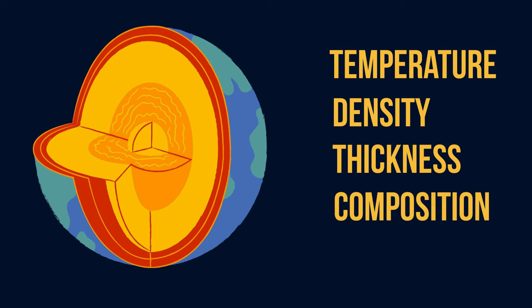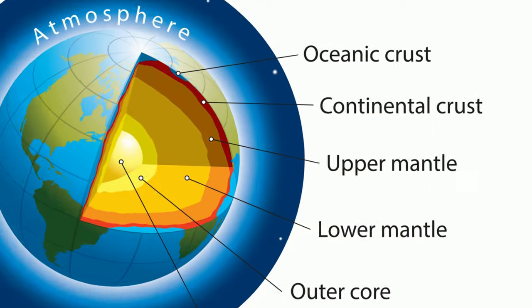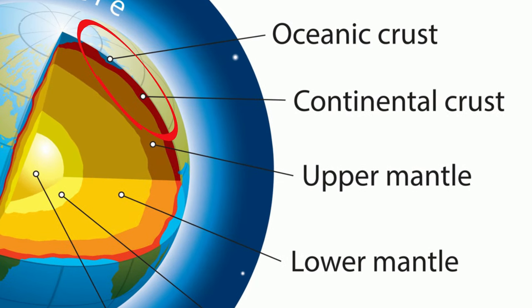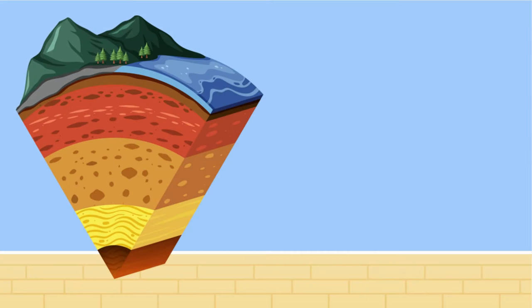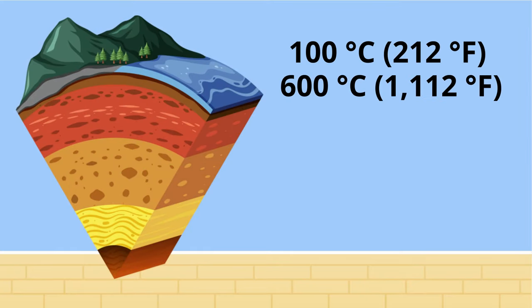The crust is the layer of the earth that sits on top of the mantle. It is less dense than the mantle and therefore kind of floats on the mantle. The temperature of the crust increases with depth. Temperature ranges from what the surface temperature is, which could be from freezing to over 100 degrees Fahrenheit to about 100 degrees Celsius to 600 degrees Celsius where the crust meets the mantle.